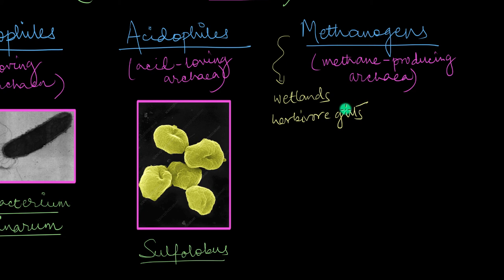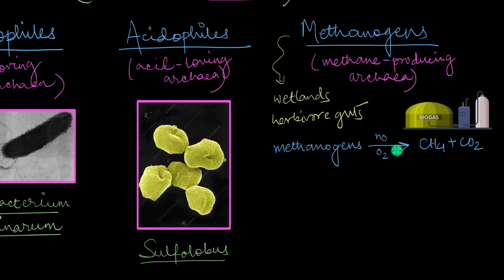But that's not all. Methanogens also help us. But how exactly? Well, methanogens are strict anaerobes, meaning that they grow only in the absence of oxygen. As they digest or break down organic matter in the absence of oxygen, they produce two things. One is methane, as you already know, and the other thing is carbon dioxide.